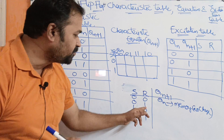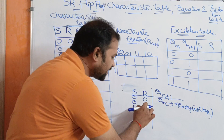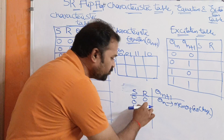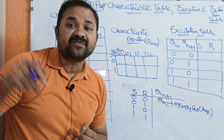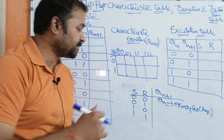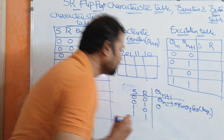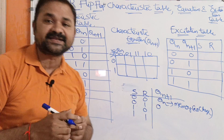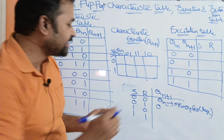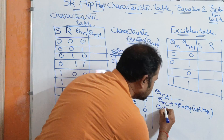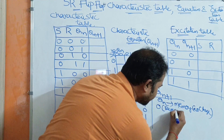Next, if the inputs are 01, here reset value is 1. If R value is 1, then the output is 0. Because R stands for reset — reset means 0.